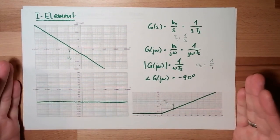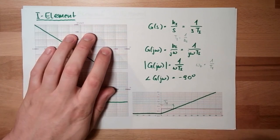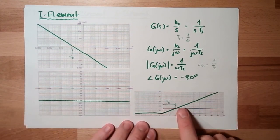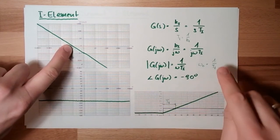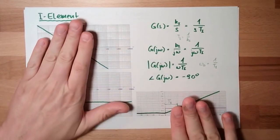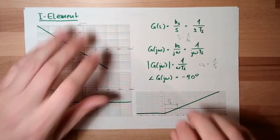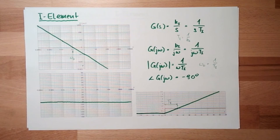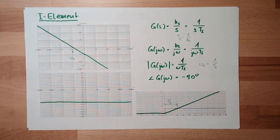That is the I element — we have covered its frequency response, step response, and transfer function. From the step response or Bode plot you can read off ti and derive the transfer function, and vice versa. We now have the proportional element and the integrating element; next we will also have the differentiating element, which will be covered in the next video. Thank you very much for listening — goodbye!